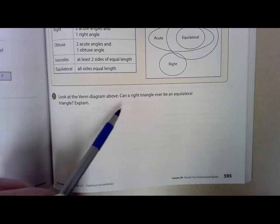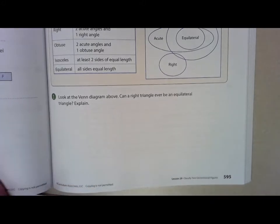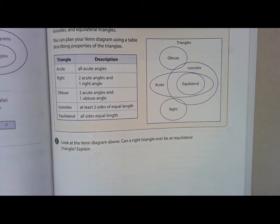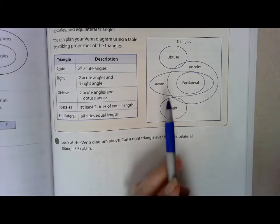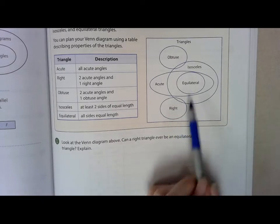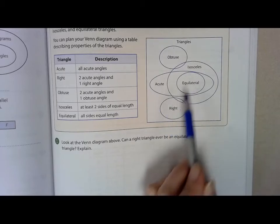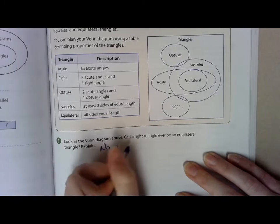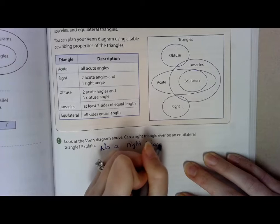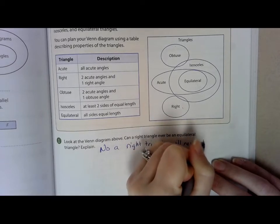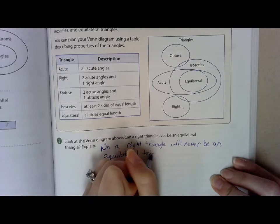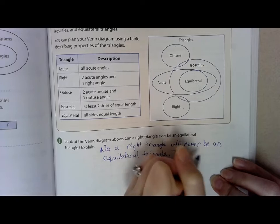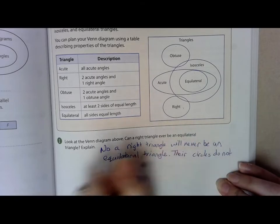On page 595, it says: look at the Venn diagram above — can a right triangle ever be an equilateral triangle? If we look at a right triangle and an equilateral triangle, they don't overlap. A right triangle will never be an equilateral triangle. Their circles do not overlap.